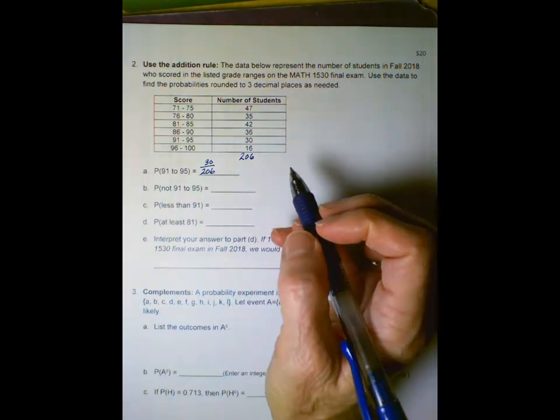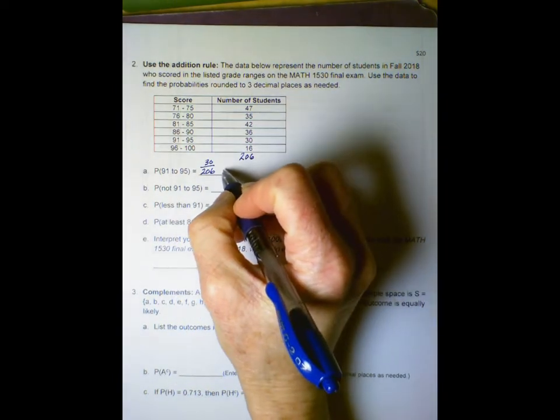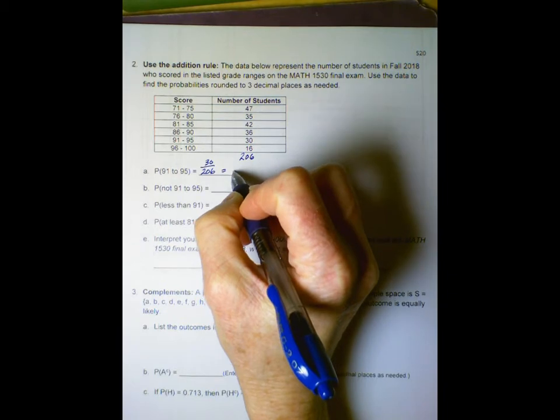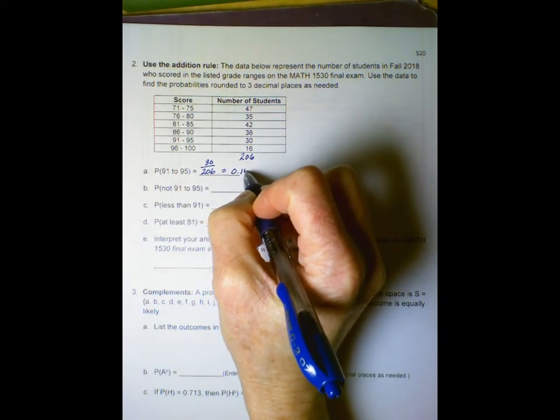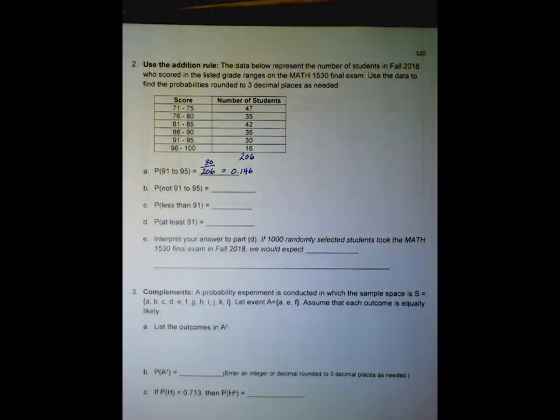We're to round to three decimal places, so 30 divided by 206 would be 0.146.